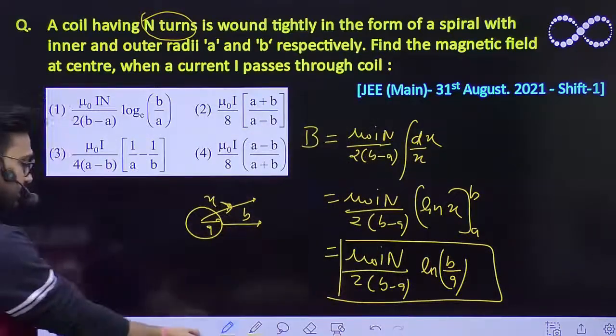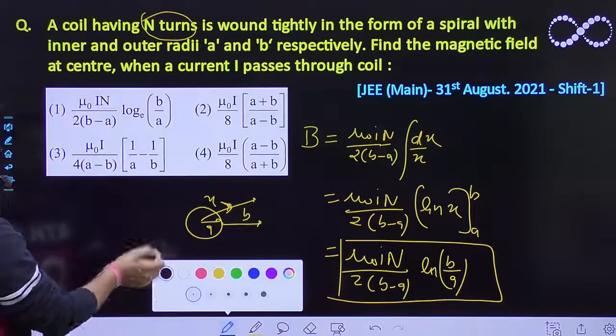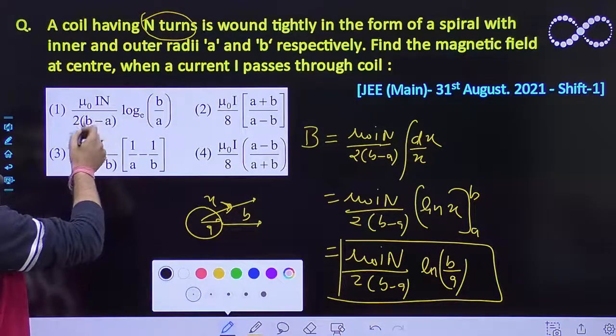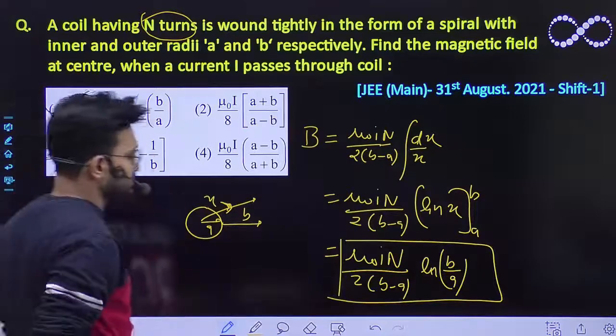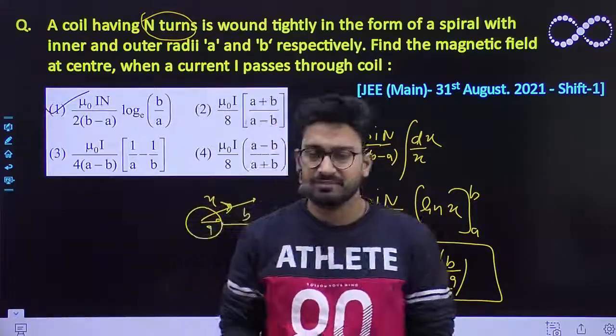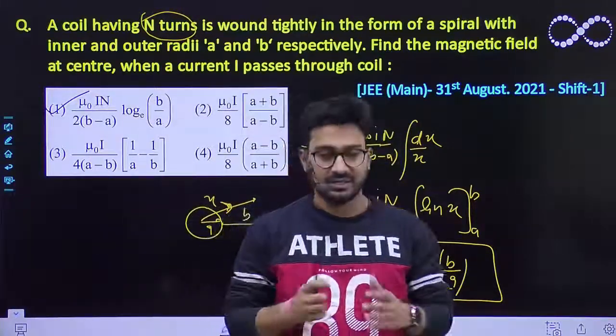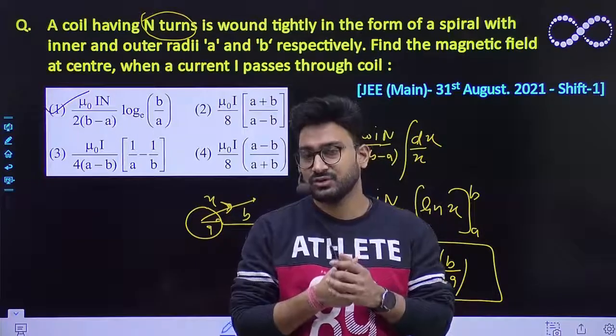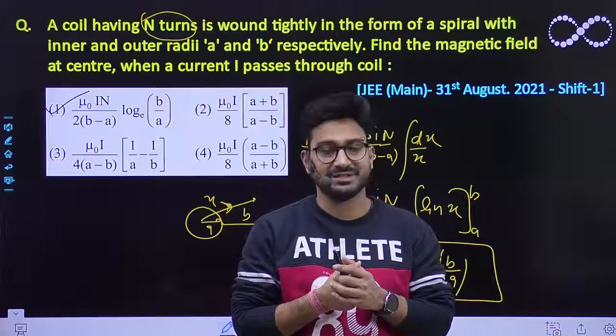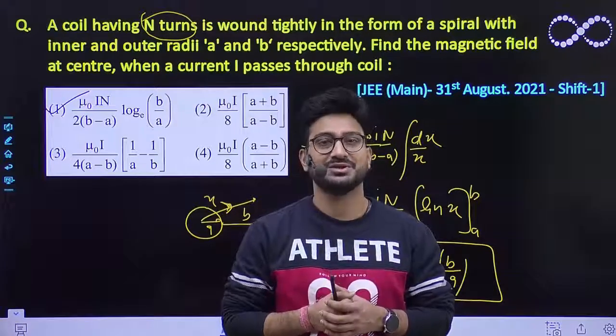So which option is correct? Your first option, which is μ₀IN/[2(B-A)] ln(B/A), this is the correct option that you should get. This question is also easier, it is not very much lengthier. If you know the concept, you can easily apply it and you will get the answer. I hope this question is clear to everyone. Thank you.